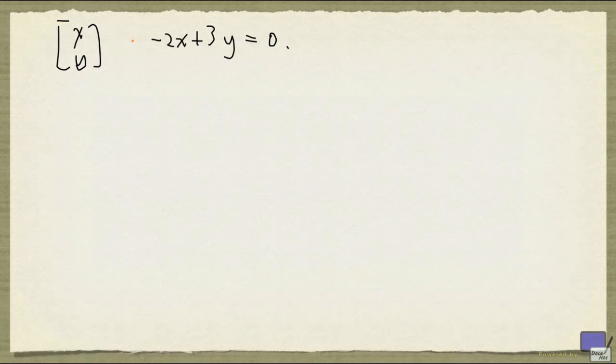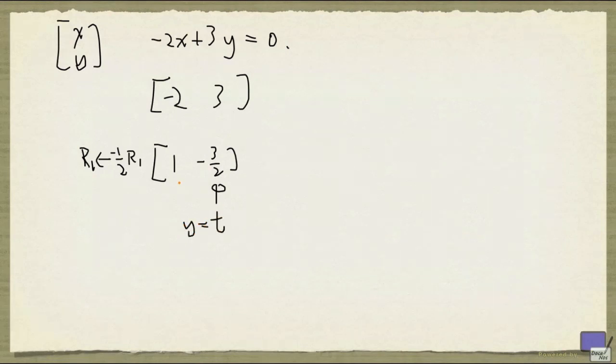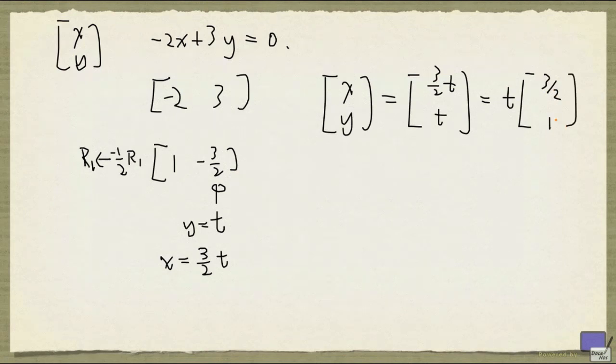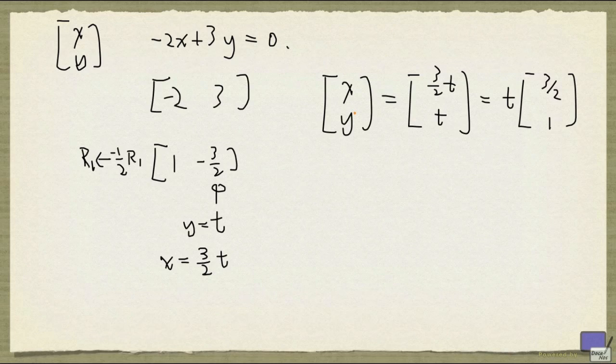We can see this algebraically. We want to characterize x, y satisfying this equation. We can do this using row reduction. We can form the augmented matrix, but in this case, we don't really need the right hand side because it's 0. If you multiply this row matrix by minus 1 half, you get to this. So y is going to be a free variable, so I can set y to t, and x is going to be 3 half t. So the set of x, y satisfying this equation can be written as (3/2)t and t, which we can write as t times (3/2, 1), where t can be any real number.